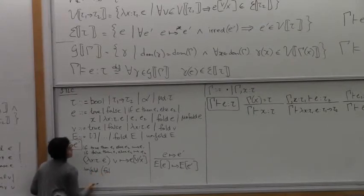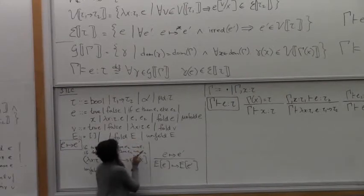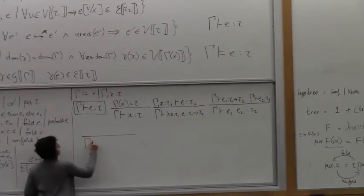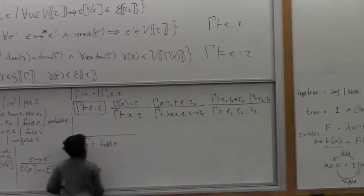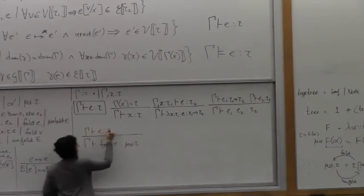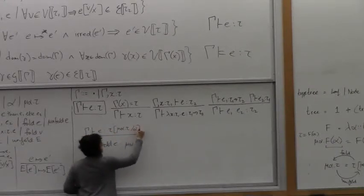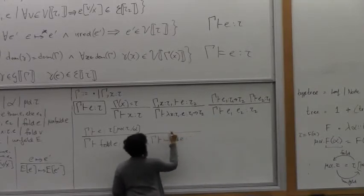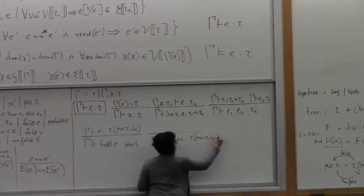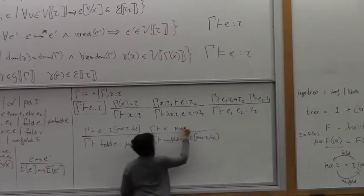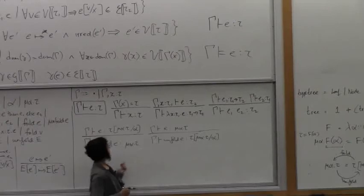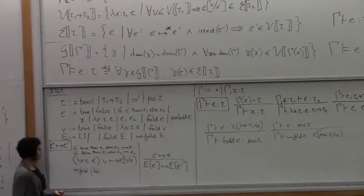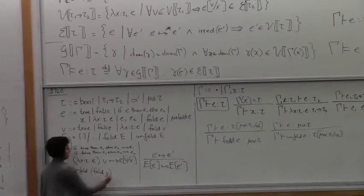In terms of typing rules: under gamma, fold E has type mu alpha tau if E has type tau with mu alpha tau for alpha. And unfold E has the expanded type tau with mu alpha tau for alpha. In terms of operational semantics, the only reduction rule we need to add is: unfold of fold V steps to V.